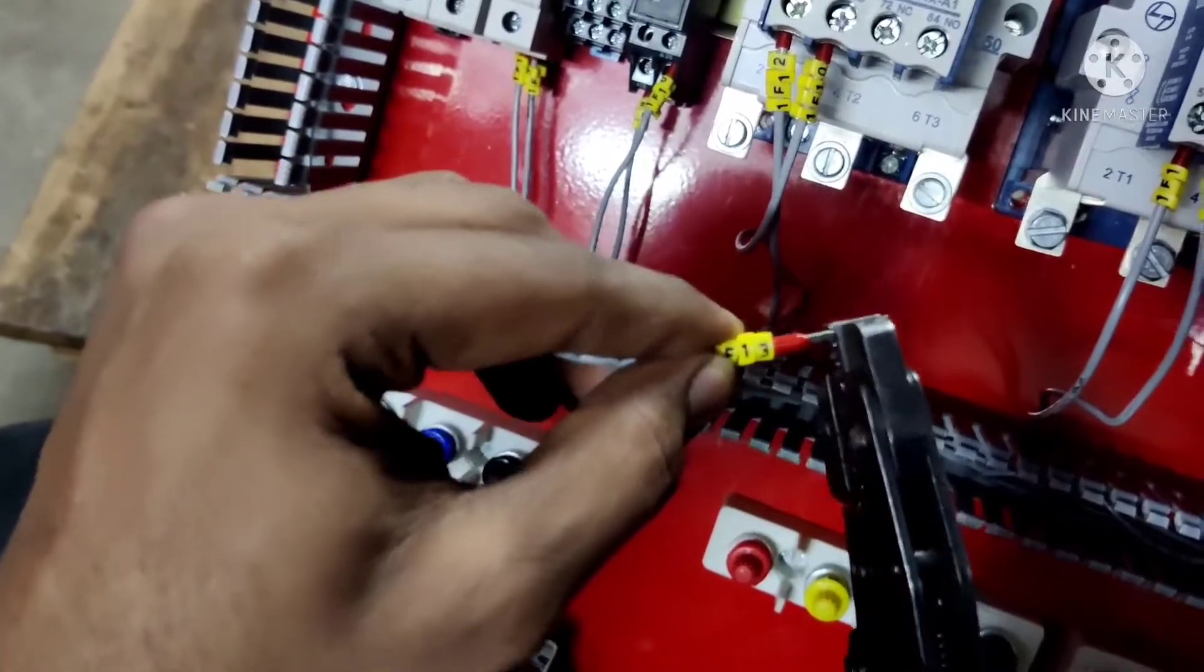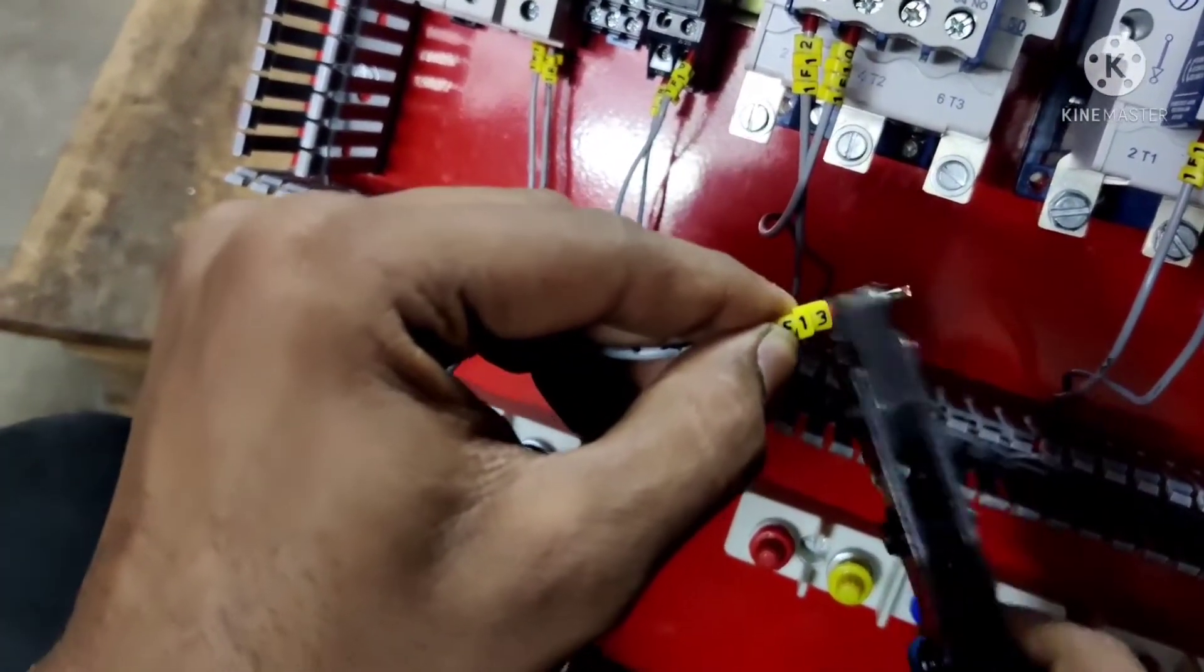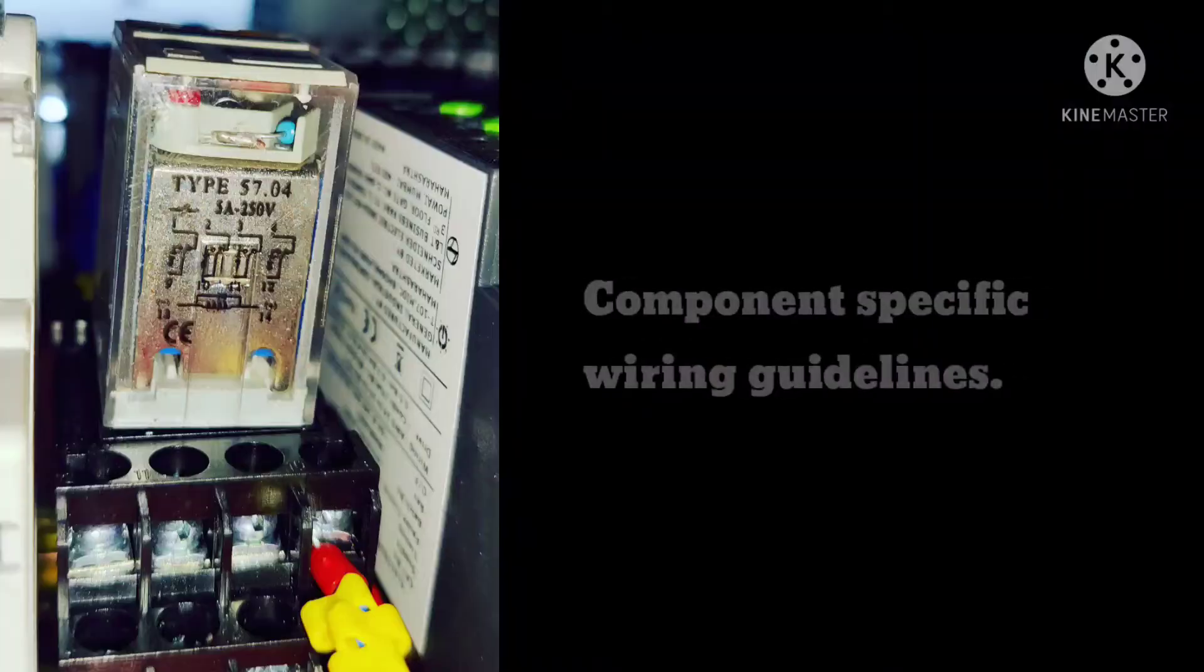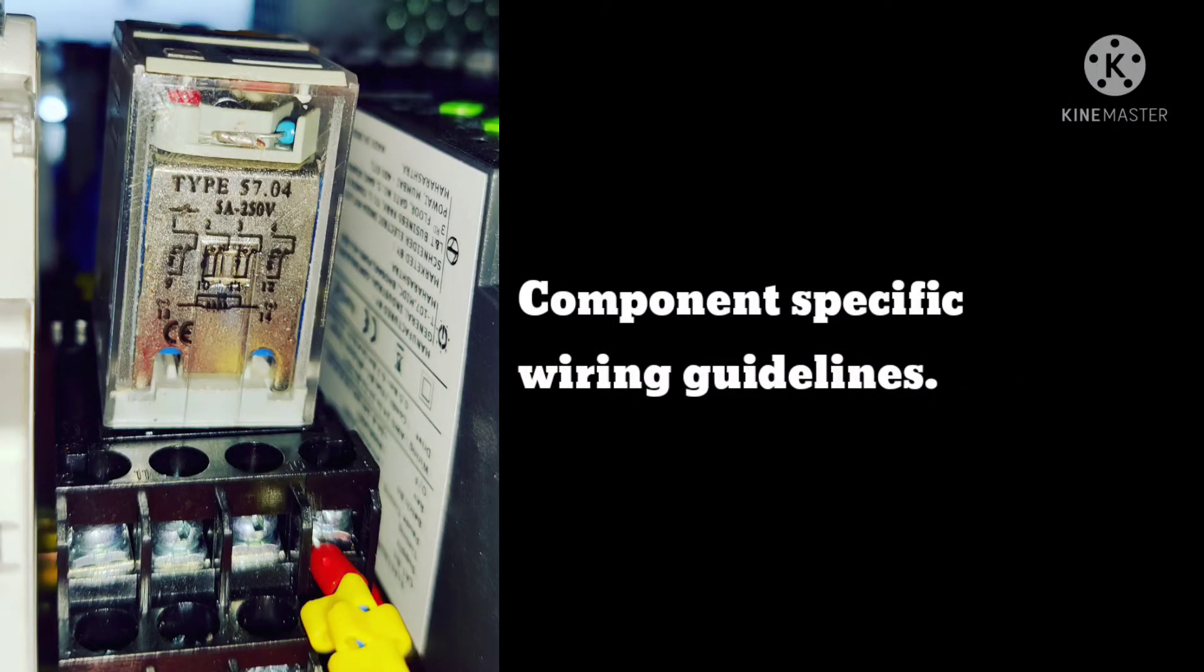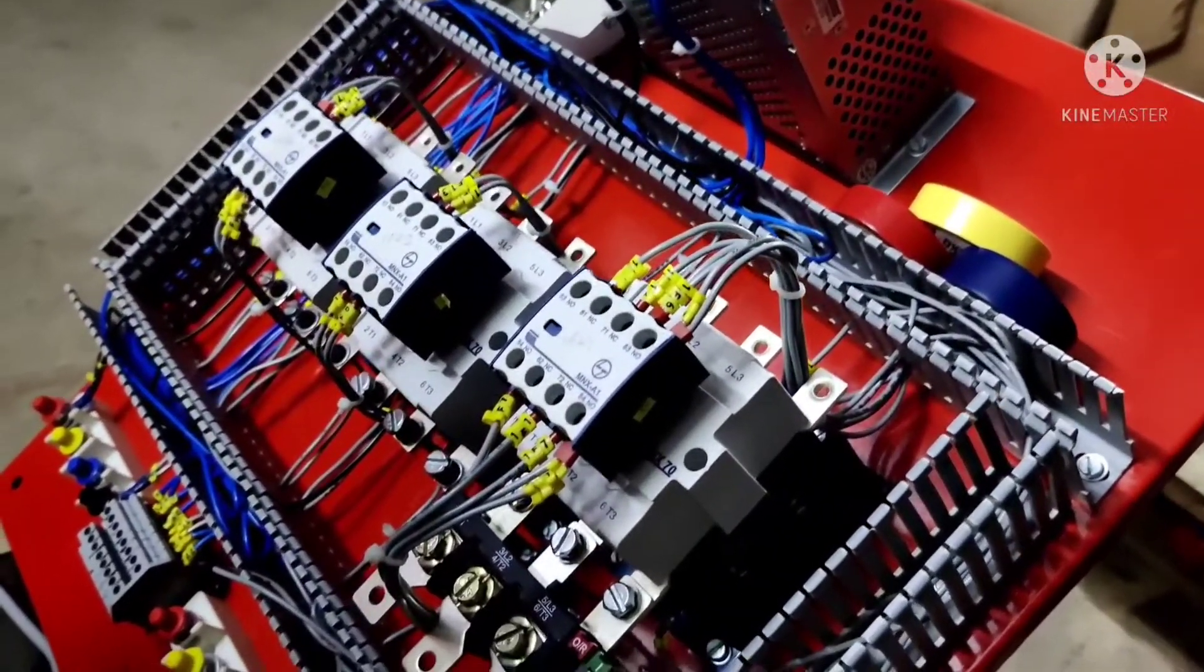This is how the termination numbering and crimping is done. To follow the component specific wiring guidelines is very important while doing the control wiring. This is how the panel looks like when control wiring is finished.